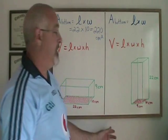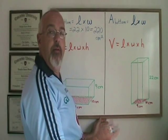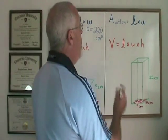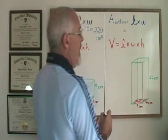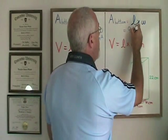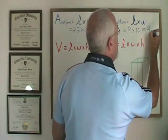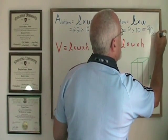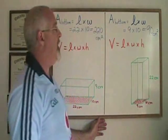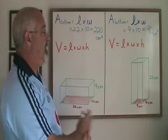For this rectangular prism, the area of the bottom is still going to be found with the area of a rectangle formula length times width. And it will be length of 9 times width of 10. And 9 times 10 is 90. We still have the same unit centimeters squared. So what the area of the bottom is depends on which side is on the bottom.